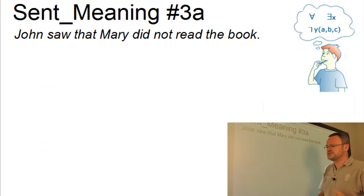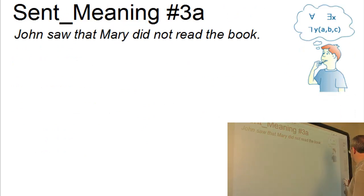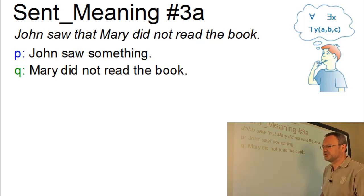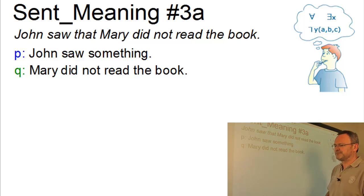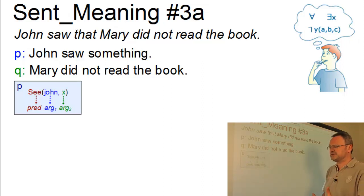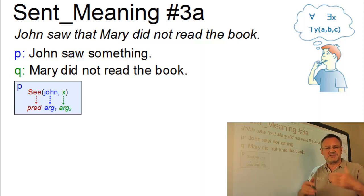Our first sentence can be split into two propositions: P — John saw something — and Q — Mary didn't read the book. P is a predication with a two-place predicate where the first argument is John and the second argument is the entire proposition Q.